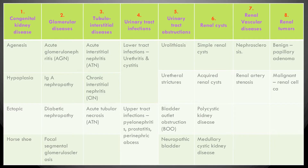Nephropathies — diseases of the kidneys — are summarized into eight types: (1) congenital diseases, (2) glomerular diseases, (3) tubulo-interstitial diseases, (4) urinary tract infections, (5) urinary tract obstructions such as kidney stones, (6) renal cysts, (7) vascular diseases of the renal blood vessels, and (8) renal tumors.